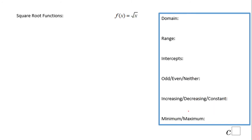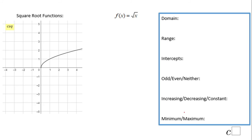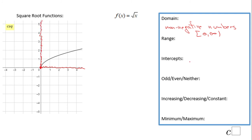The next function is the square root function. This is the graph — you can get it using a table. Be careful with the domain: only positive numbers or zero are allowed — non-negative numbers — because you cannot take the square root of negative numbers. In interval notation: [0, infinity). The range is similar — you can get only positive numbers or zero, so [0, infinity).